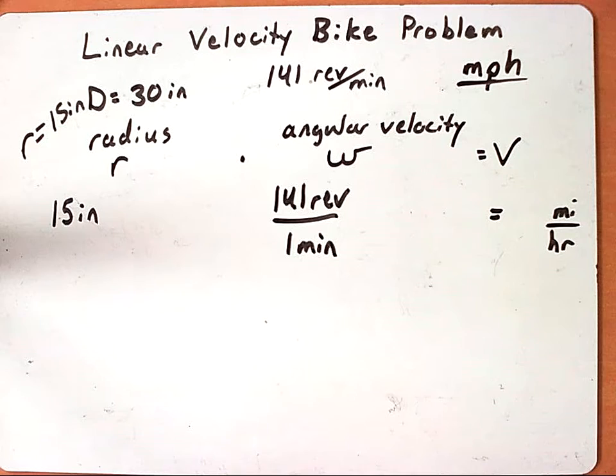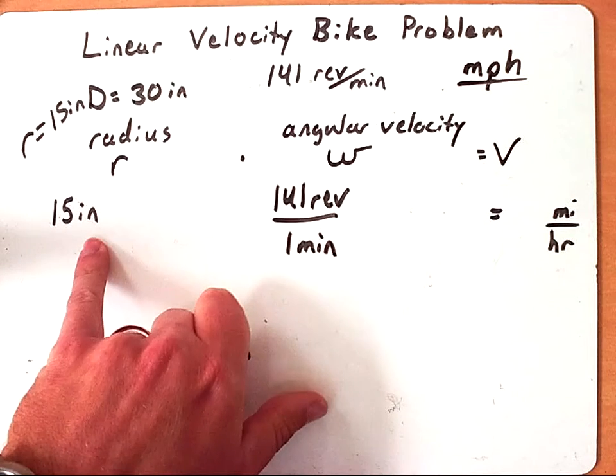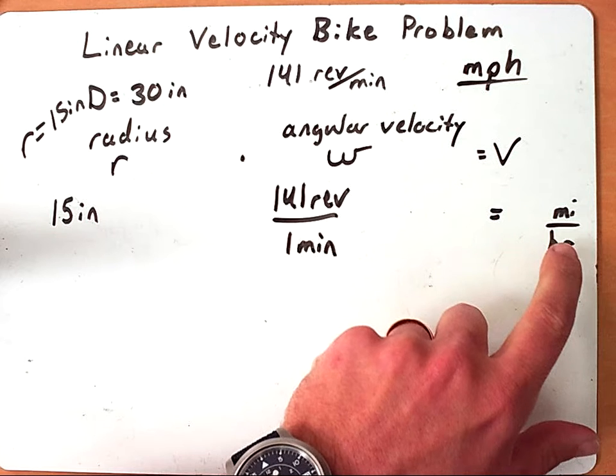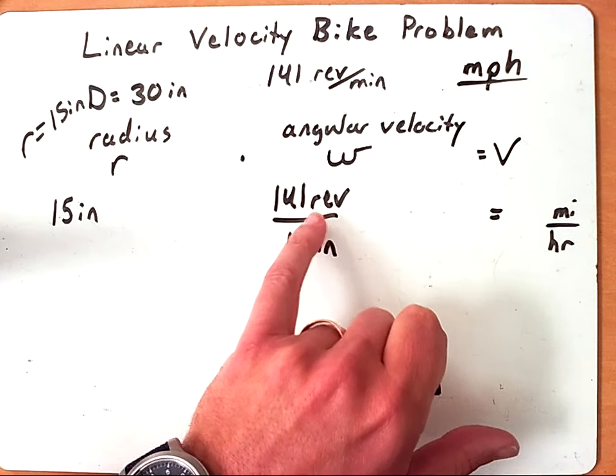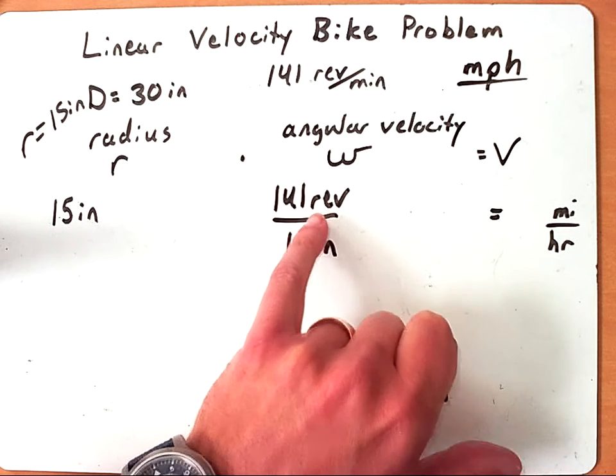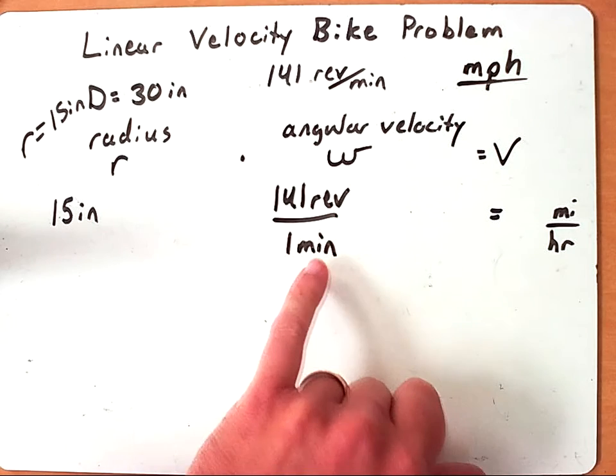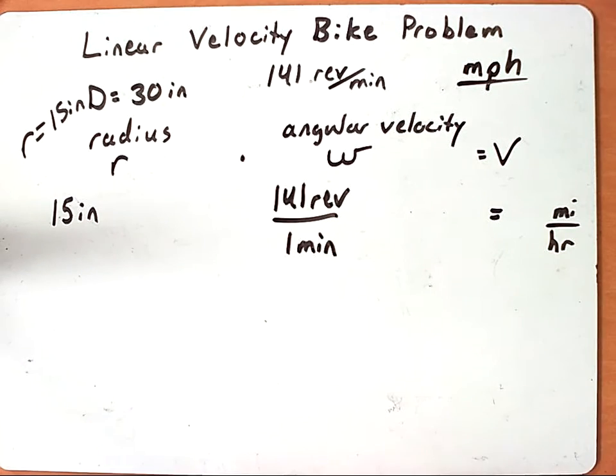All right, so we have a little bit of work to do. We're currently in inches and we need to move that to miles, so we're going to have to convert a few units. We're in revolutions, so to get angular velocity, this needs to be in radians, so we're going to have to convert that from revolutions to radians, and then convert our minutes to hours so that we are in the proper unit there as well. So let's get started.